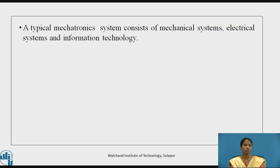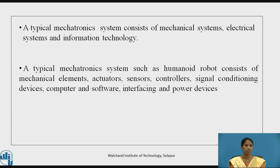Let's see what is a typical mechatronics system. A mechatronics system consists of mechanical systems, electrical systems, and information technology. A typical mechatronics system, such as a humanoid robot, consists of mechanical elements, sensors, actuators, controllers, signal conditioning devices, computer and software interfacing, and power devices.